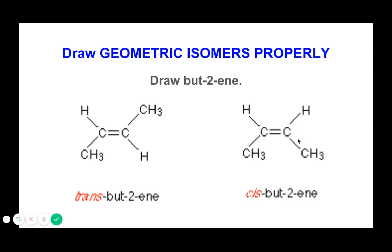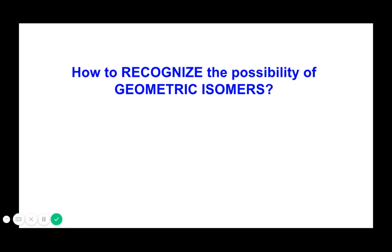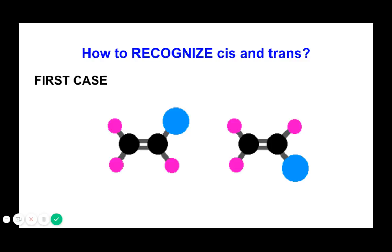Now let me present four cases to help you recognize the possibility of geometric isomers — take notes so you can use these as reference when answering cis/trans exercises. In Case 1, the black circles represent the C=C carbons, and the purple and blue circles represent attached groups. On the left carbon, both structures show the same group; on the right side, the groups differ. This does not qualify for cis/trans isomerism — the same group must never appear on both bonds of one carbon.